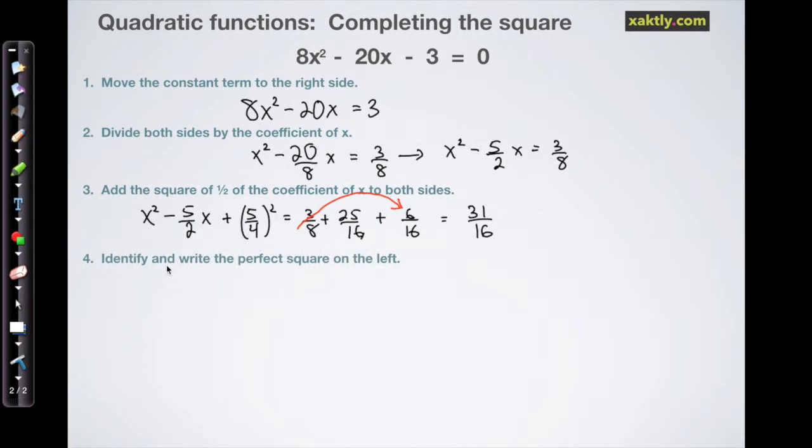Because we've written it in a way that makes that very easy, it's just (x - 5/4)² and that's equal to 31/16 on the right.